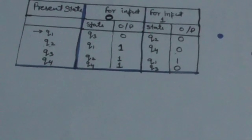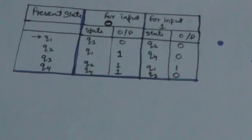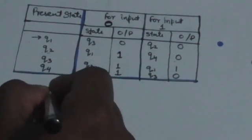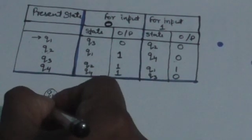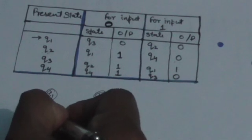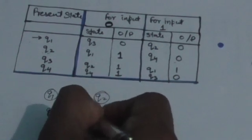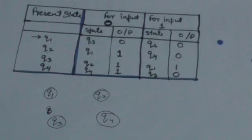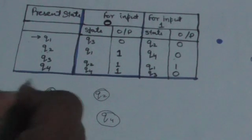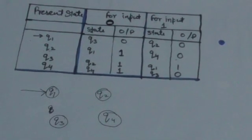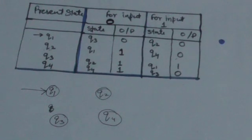Here we have four states: Q1, Q2, Q3, and Q4. Q1 is the initial state, so we put an arrow before it. The output is associated with the transition, so the output will be labeled on the arrows, since we use arrows to represent transitions.